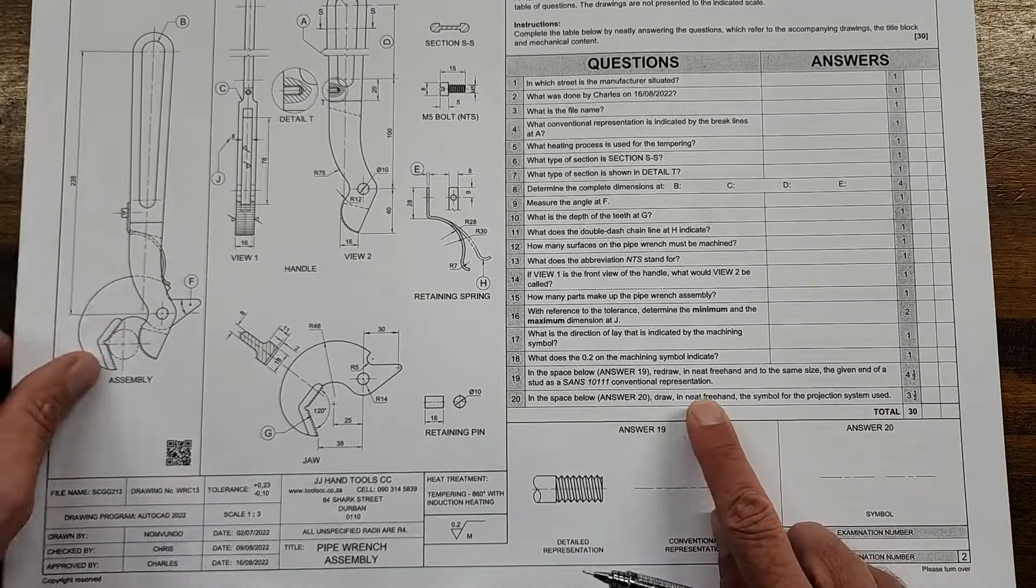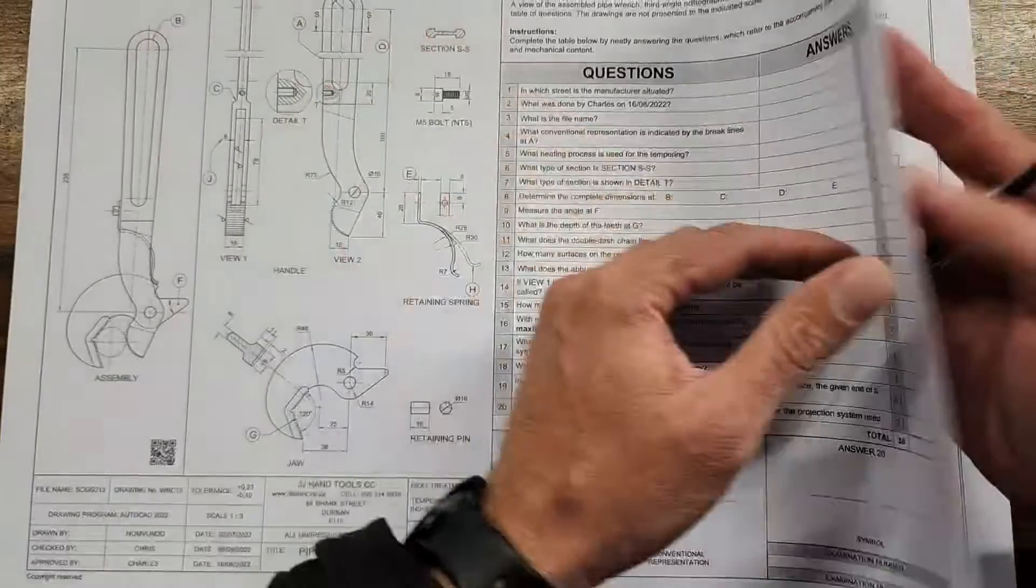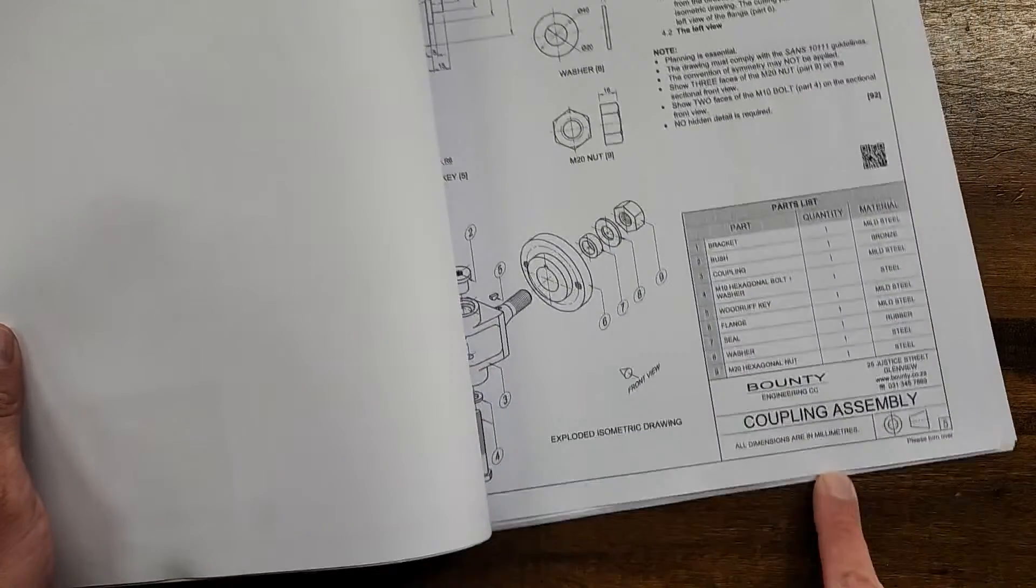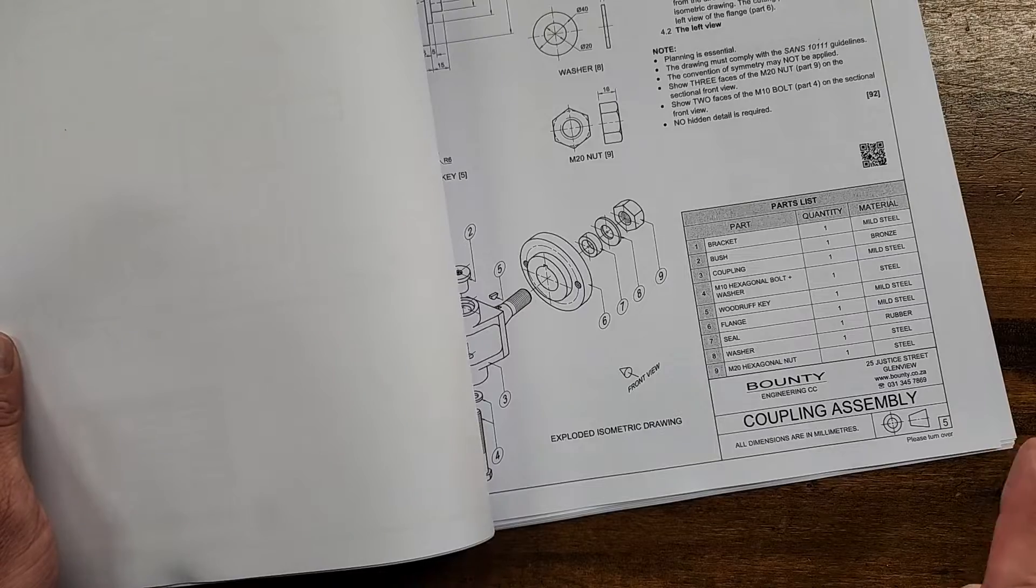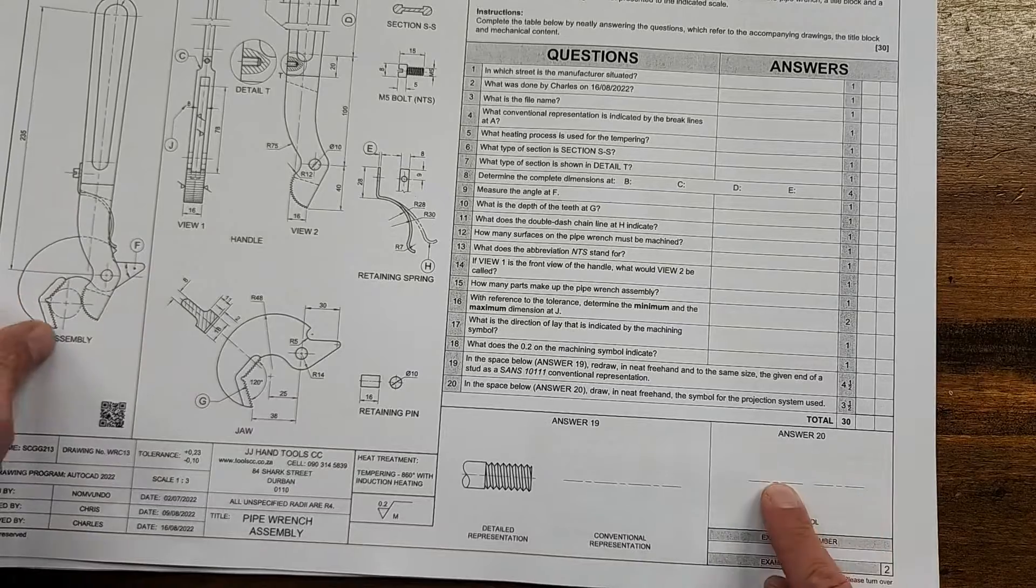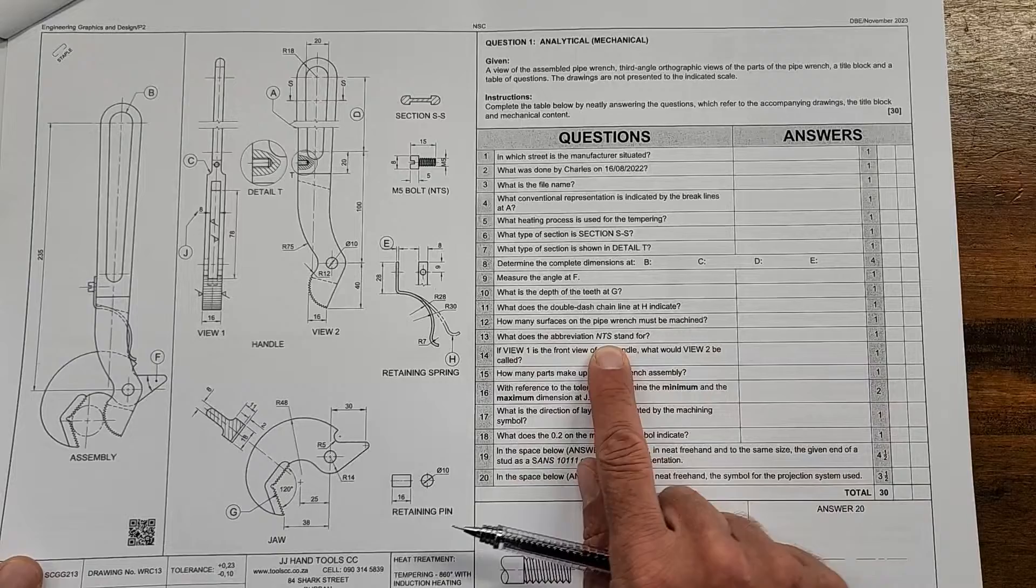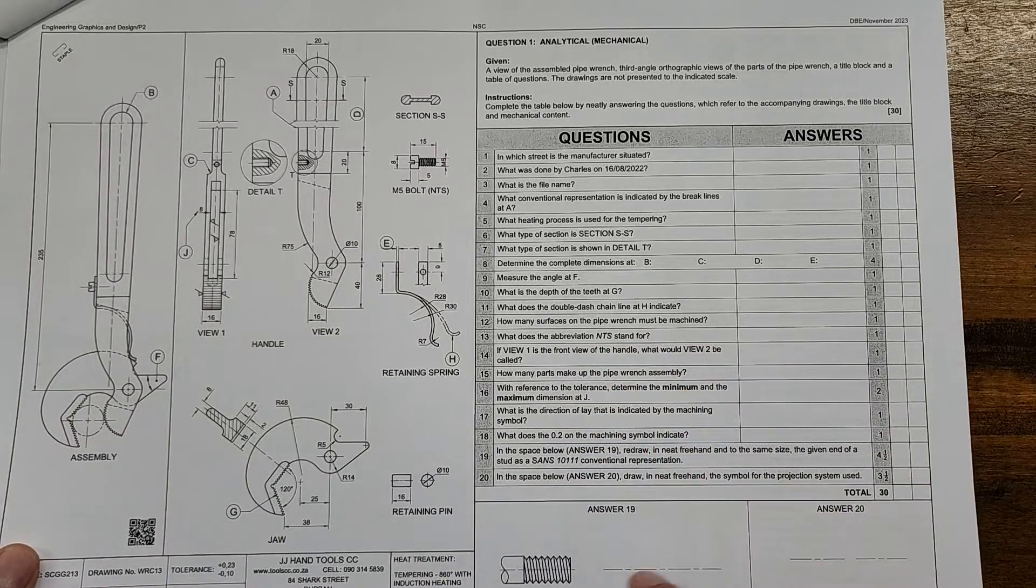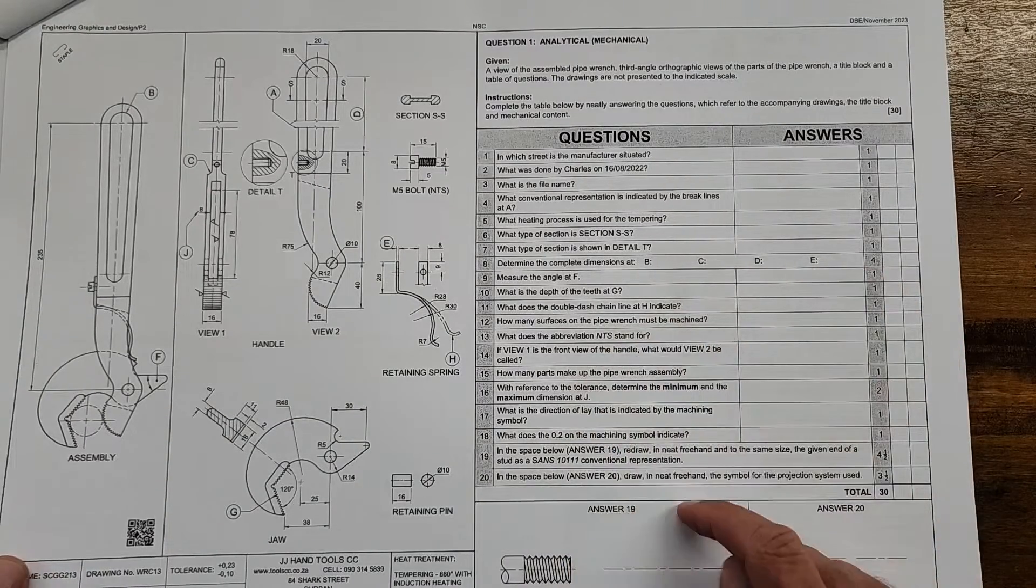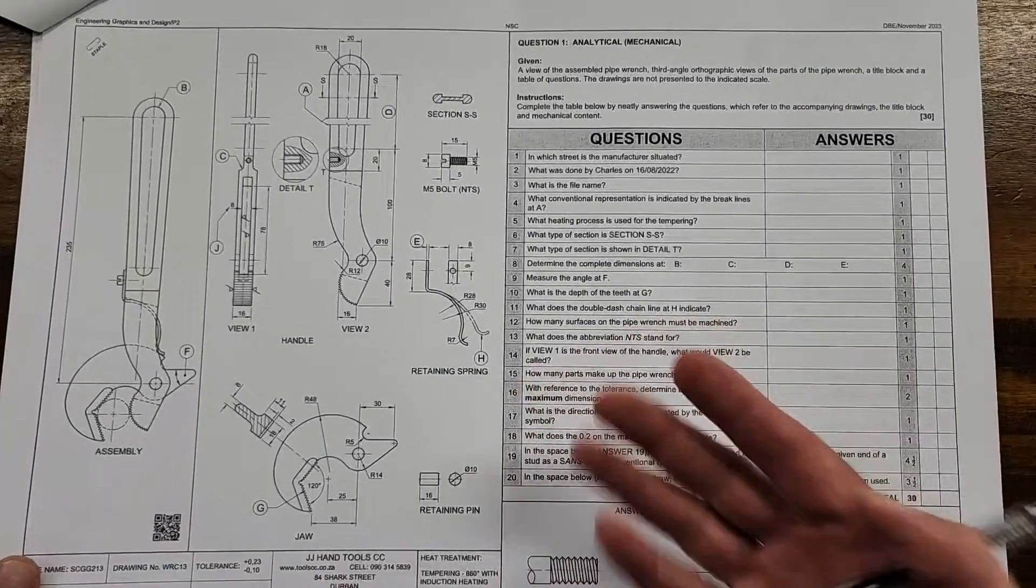They gave you the detailed representation, asked for a conventional representation. This is one of the symbols that was actually given to you in the Sun's video I made earlier. And learners, you should have gotten that one right. They asked here some on the machining symbols. We've expected that the multi-directional symbol there. Which question was that? We actually asked, what does this M stand for? That was your multi-direction. And then the 0.2, the number 18 here, was the roughness value of that machining symbol. So it's really straightforward with regards to that.